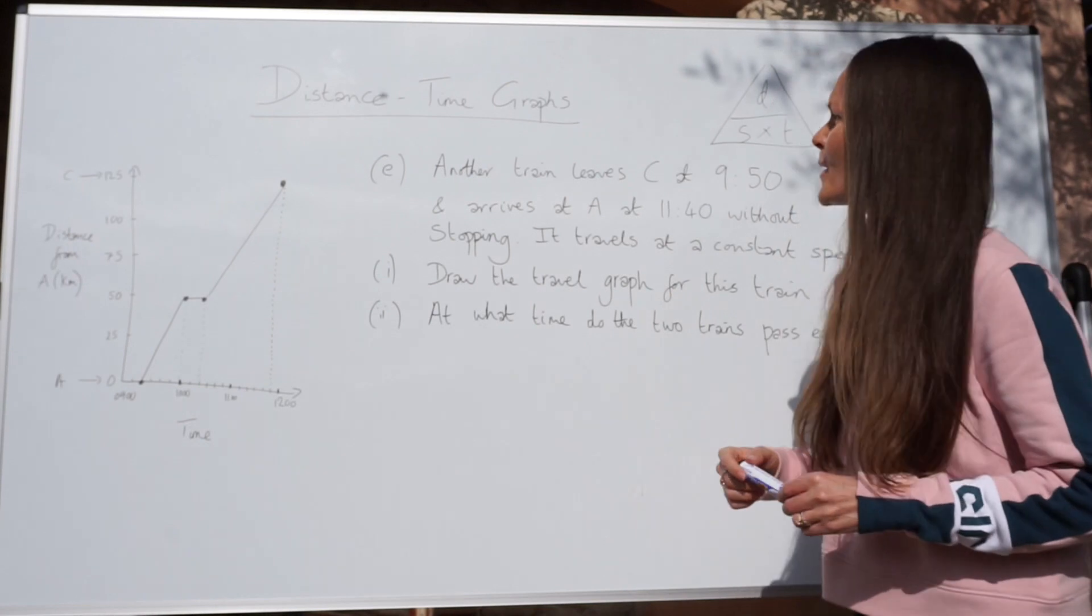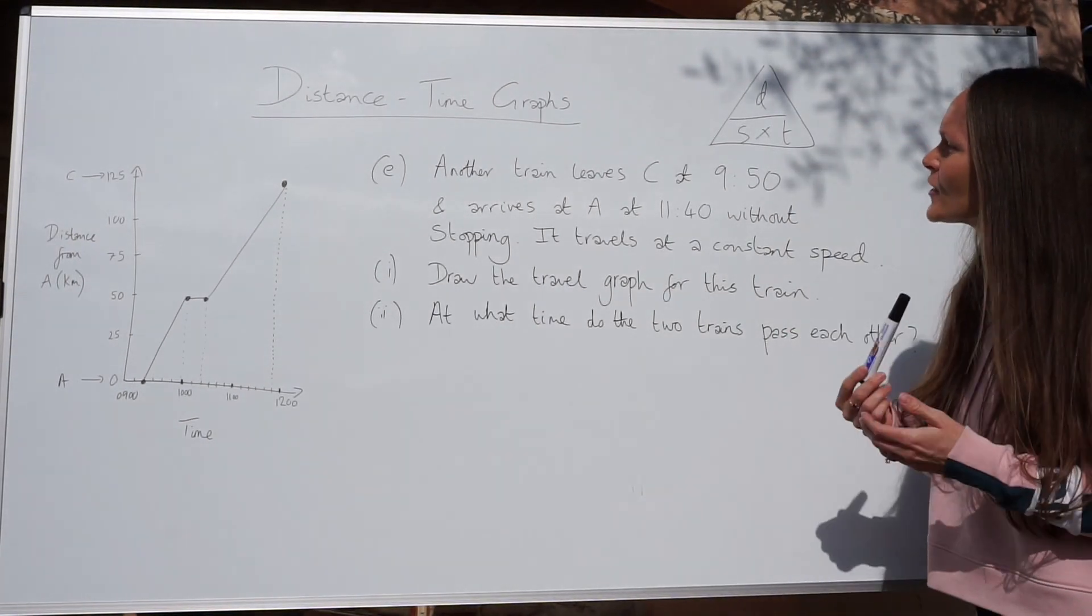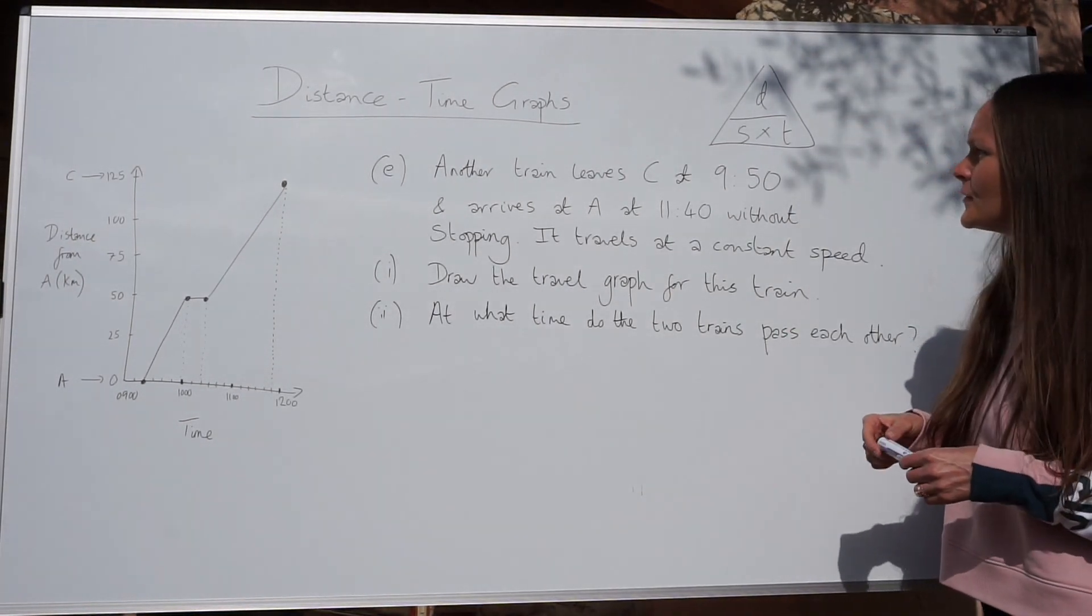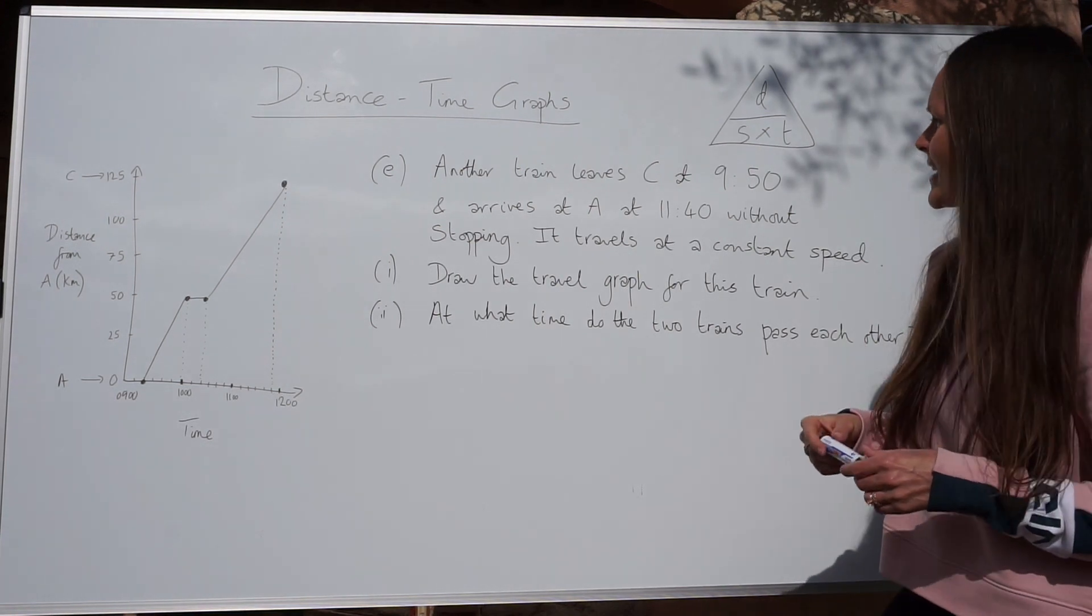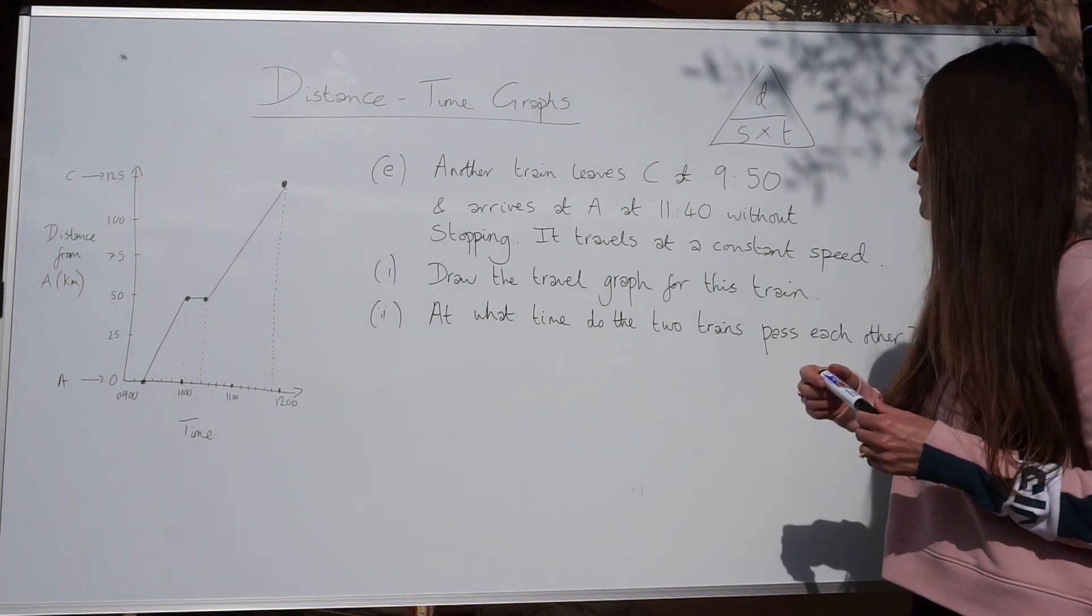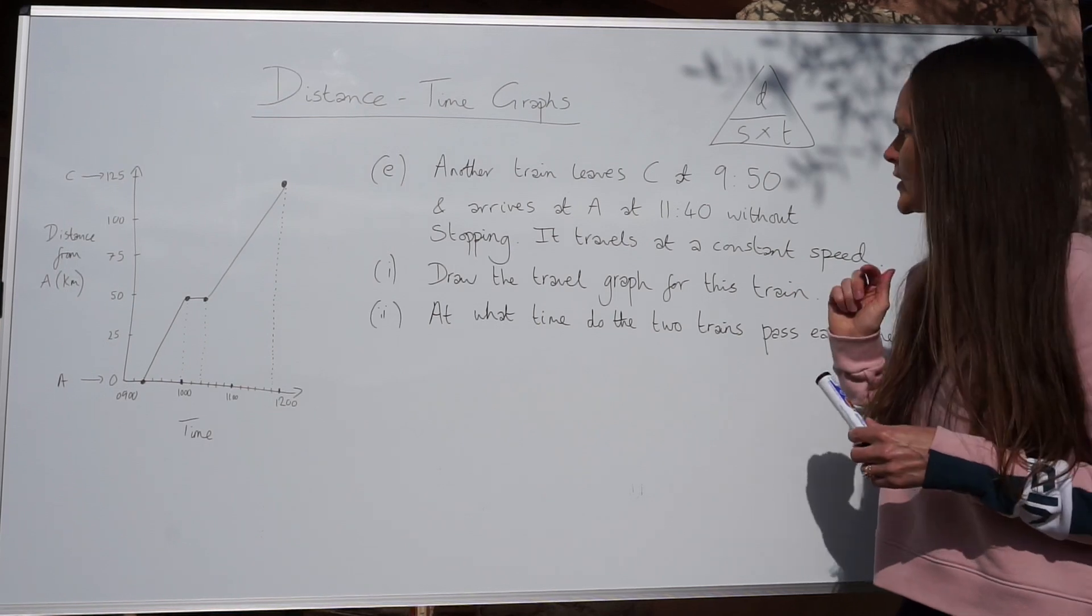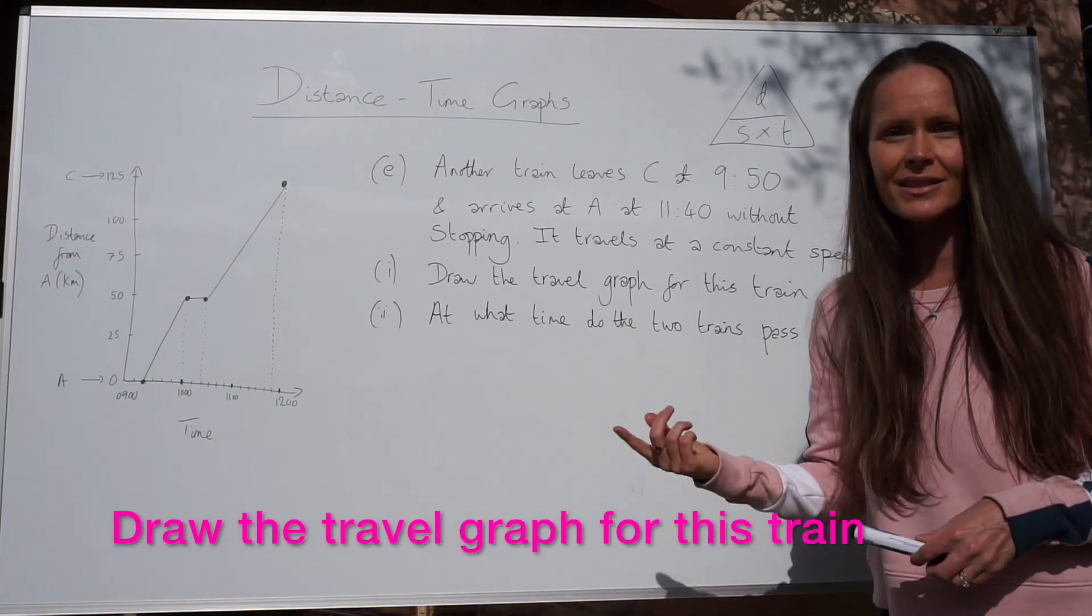On to the last part of the question. It tells us that another train leaves C at 9.50 and it arrives at A at 11.40 without stopping. It travels at a constant speed. So we need to draw the travel graph for this other train.